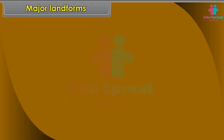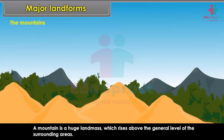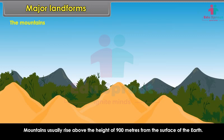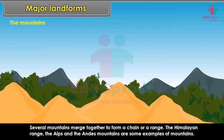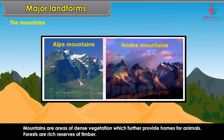The land mass has different types of landforms, generally grouped into mountains, plateaus, and plains. A mountain is a huge land mass which rises above the general level of the surrounding areas, usually above 900 metres. Several mountains merge together to form a chain or range. The Himalayan range, the Alps, and the Andes are some examples. Mountains are areas of dense vegetation providing homes for animals, and forests are rich reserves of timber.